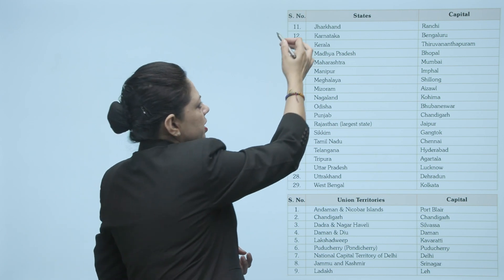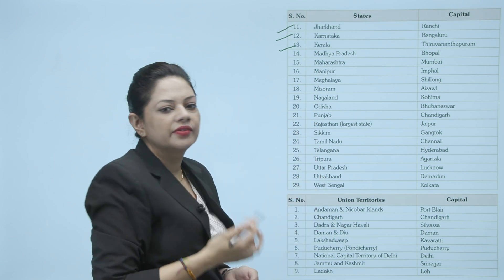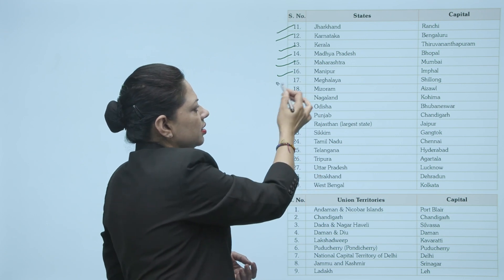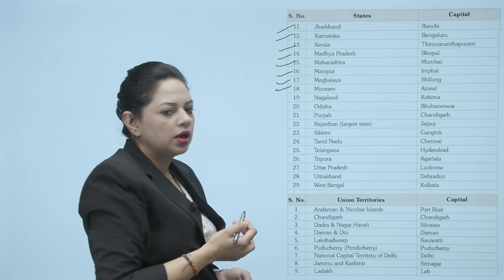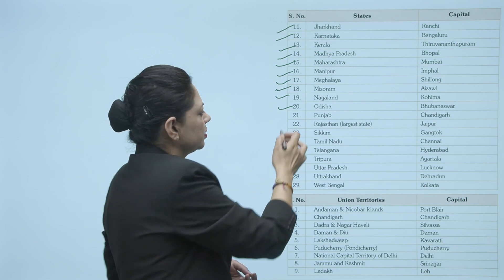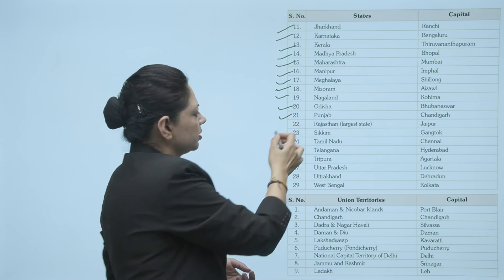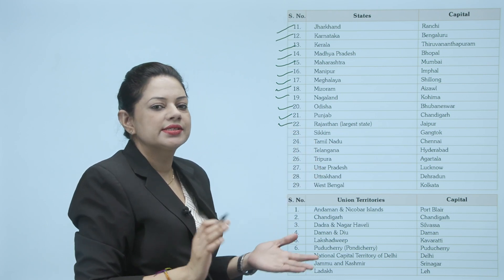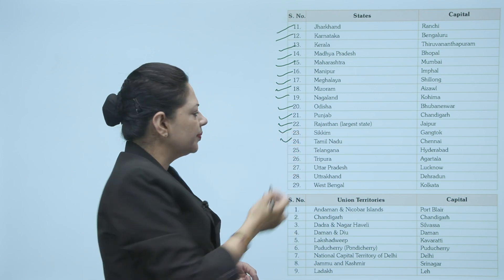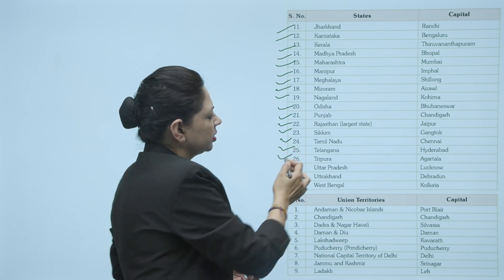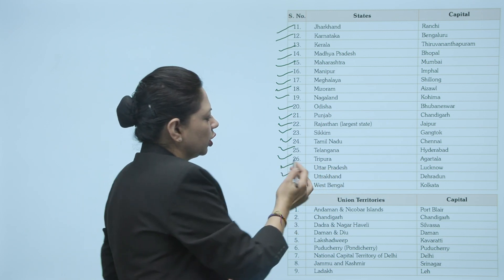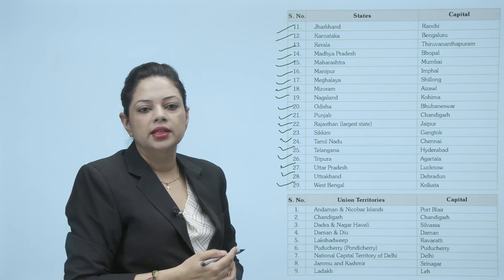Jharkhand — Ranchi. Karnataka — Bengaluru. Kerala — Thiruvananthapuram. Madhya Pradesh — Bhopal. Maharashtra — Mumbai. Manipur — Imphal. Meghalaya — Shillong. Mizoram — Aizawl. Nagaland — Kohima. Odisha — Bhubaneswar. Punjab — Chandigarh. Rajasthan — Jaipur. Rajasthan is the largest state of India. Sikkim — Gangtok. Tamil Nadu — Chennai. Telangana — Hyderabad. Tripura — Agartala. Uttar Pradesh — Lucknow. Uttarakhand — Dehradun. West Bengal — Kolkata.